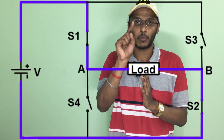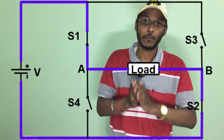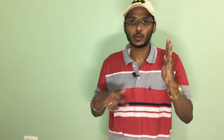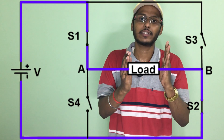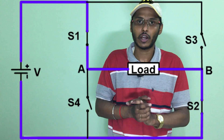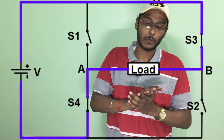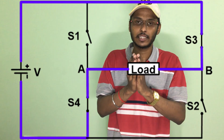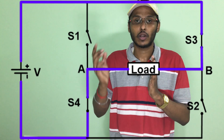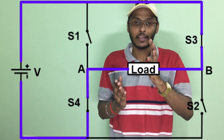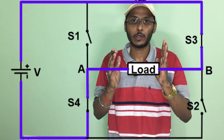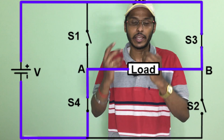What we do here is operate S1 and S2 together. We load the DC source using a bulb as the load. When S1 and S2 are on, current flows in one direction through the load — left side positive. Then S1 and S2 are turned off. When we switch S3 and S4, the polarity is reversed — left side becomes negative and right side becomes positive. This polarity change gives us an alternating output across the load.